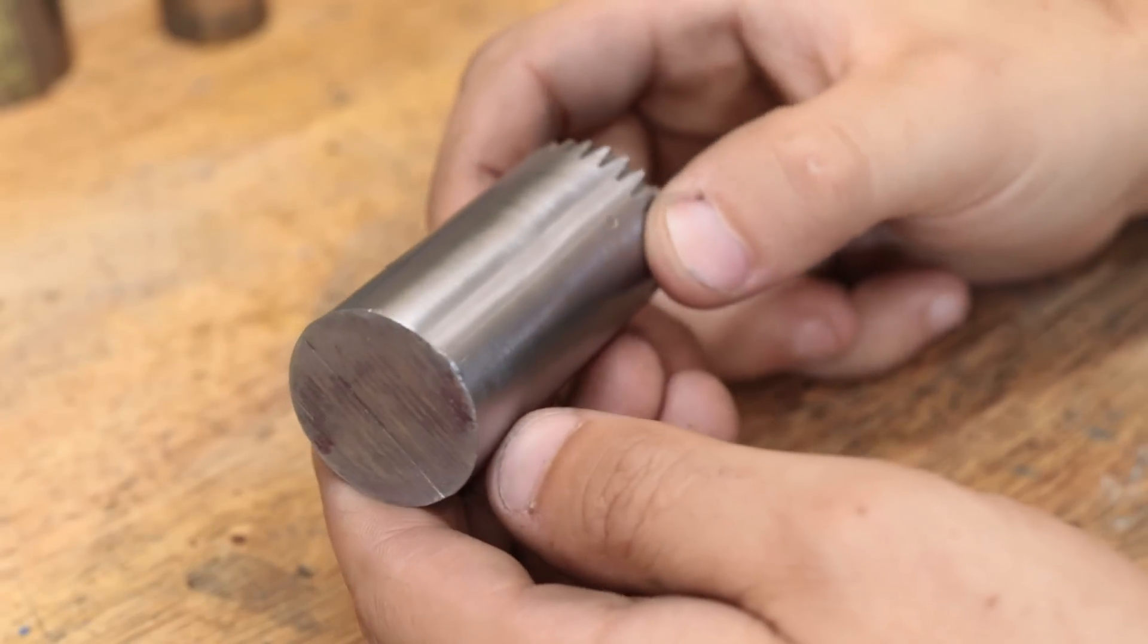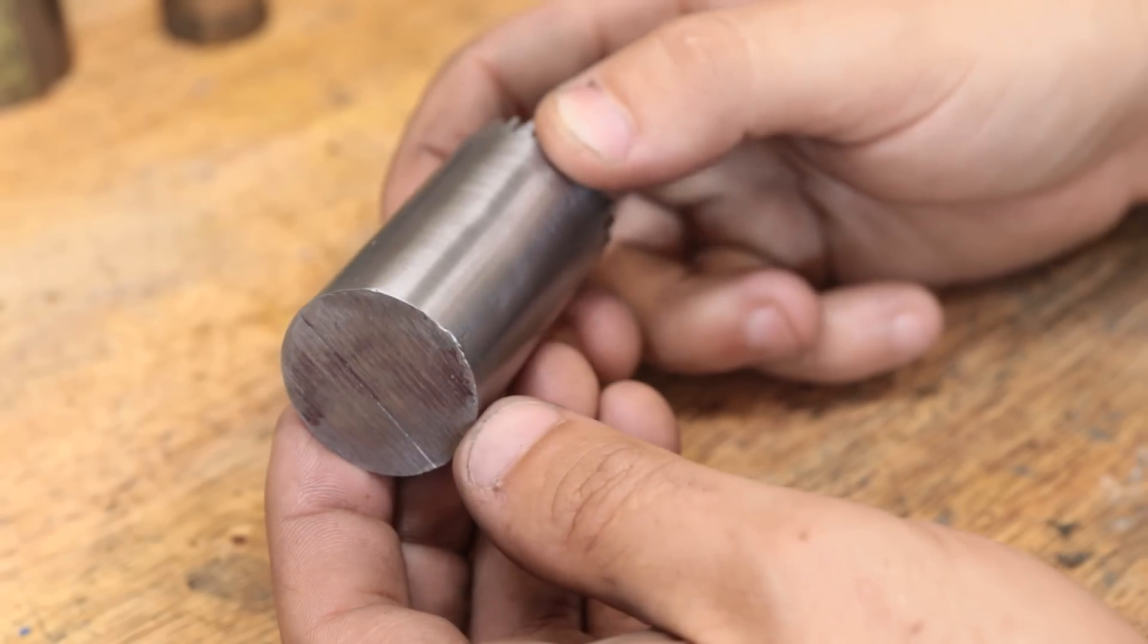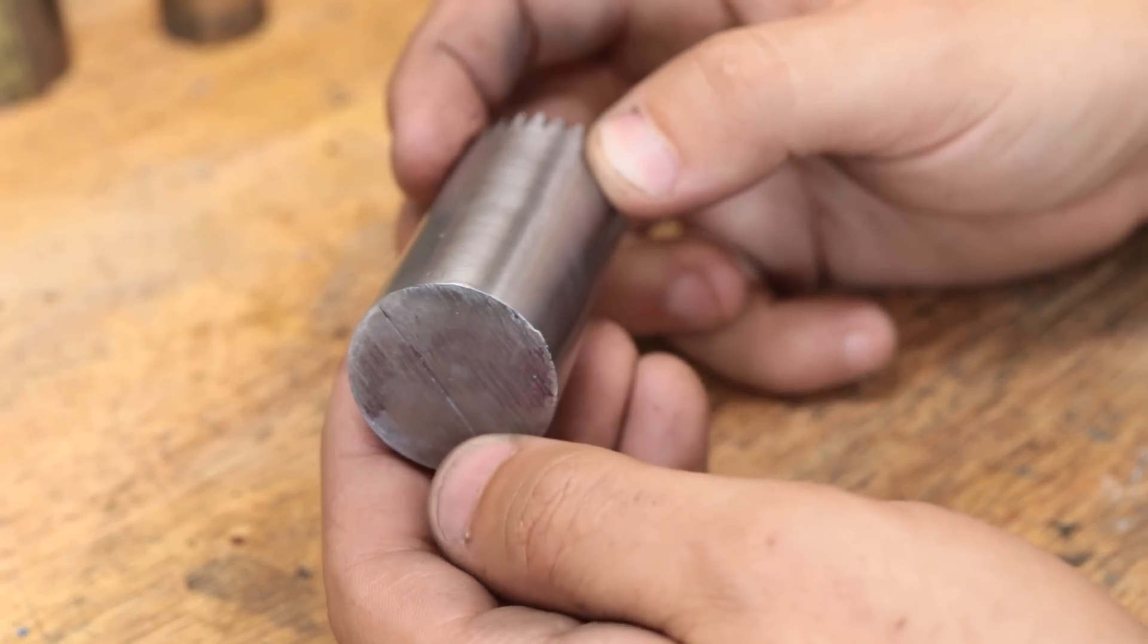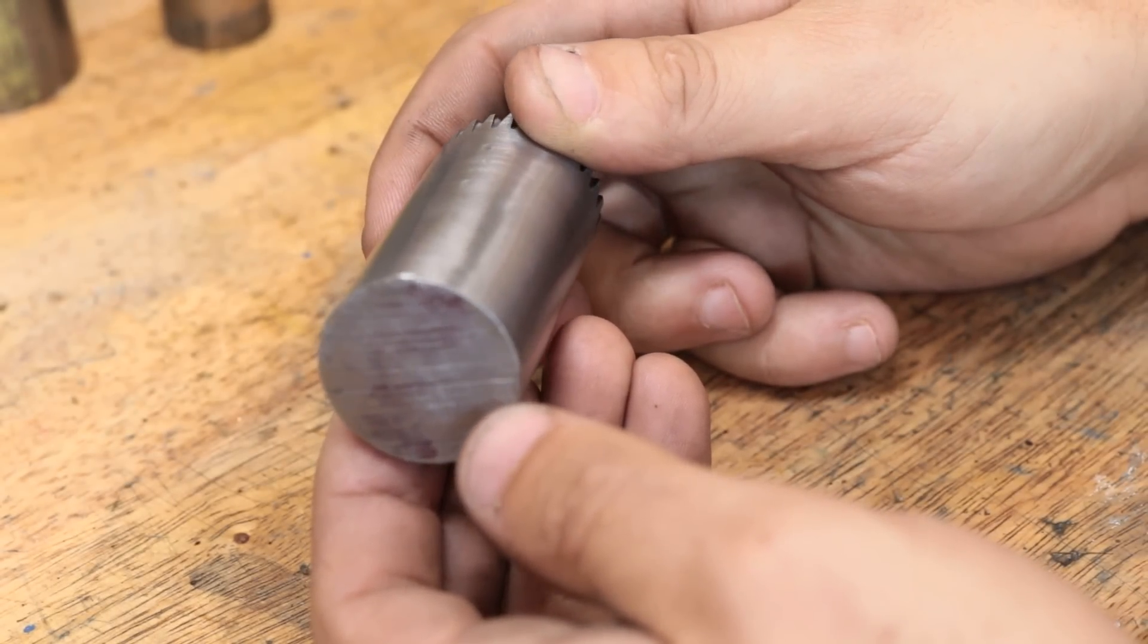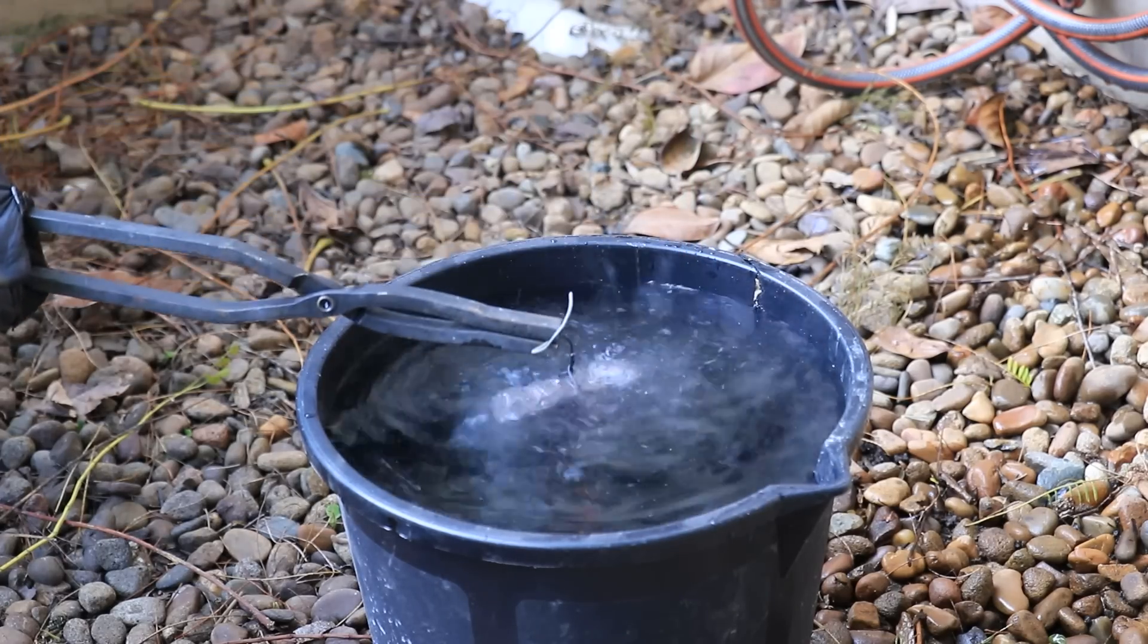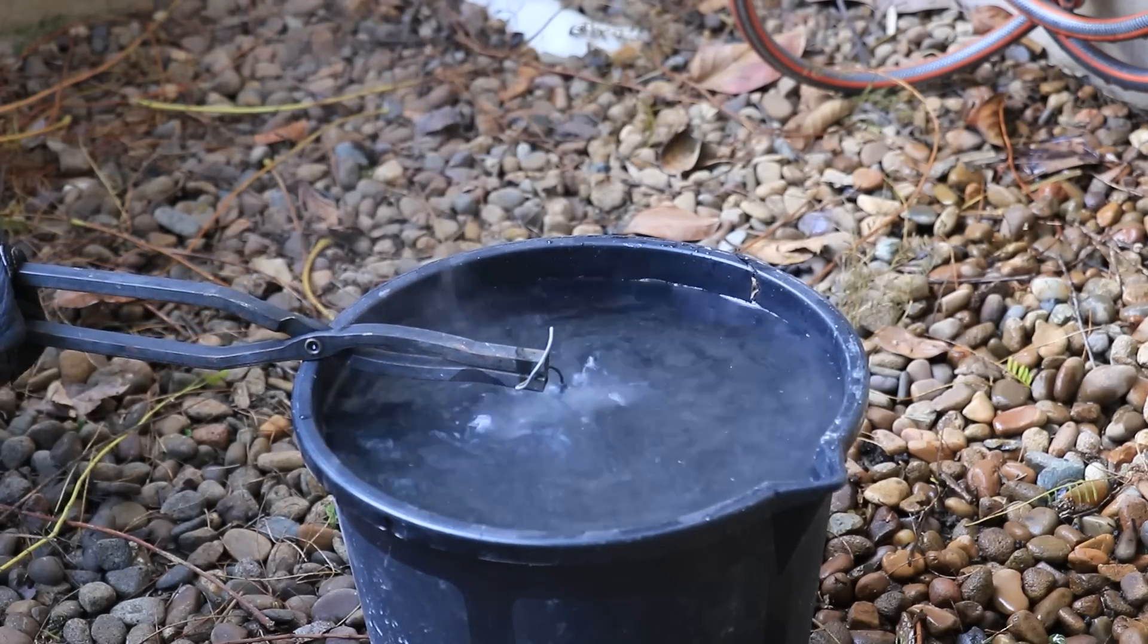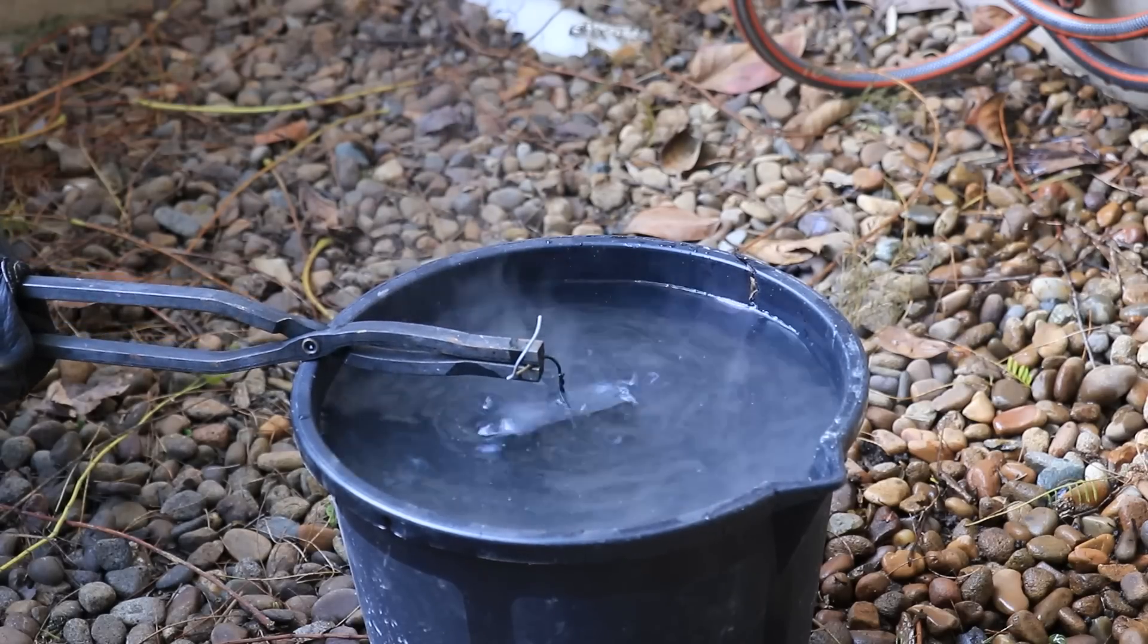Now hardenability is generally defined as how deep you can harden a piece of steel when you quench it, but you can also look at it as how fast or how slowly can you cool a piece of steel in order to harden it by the formation of martensite. Martensite forms in steel because you rapidly cool it from a red hotness, and with poor hardenability metals such as carbon steel, you may only have a second or two to cool it down in order to form martensite.